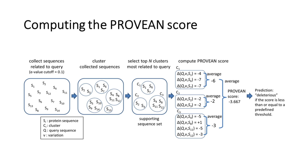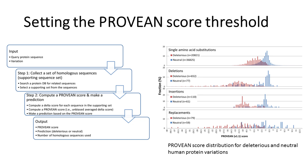The delta alignment scores are averaged within and across clusters to generate the final PRUVIAN score. If the PRUVIAN score is equal to or below a predefined threshold, the protein variant is predicted to have a deleterious effect. If the PRUVIAN score is above the threshold, the variant is predicted to have a neutral effect.